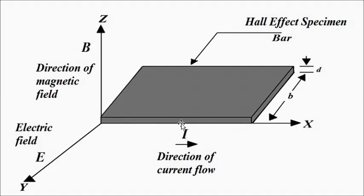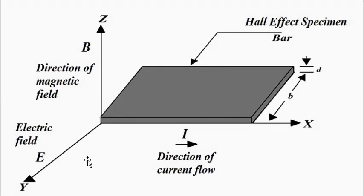Let us suppose that the specimen or conductor carries current in the direction of the X-axis — capital I is in the direction of the X-axis. This specimen is placed in a magnetic field whose direction is along the Z-axis. As a result of this, the electric field which is induced due to the Hall Effect will be in the Y-direction, which is perpendicular to both the direction of current flow along X and the direction of the magnetic field along Z.